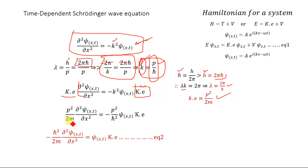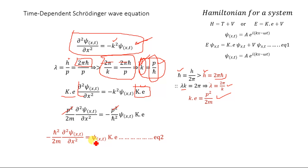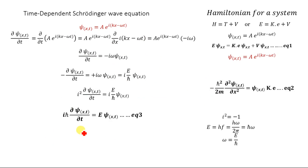The p² cancels from both sides. Shifting the minus sign and multiplying by ℏ², we obtain: −ℏ²/2m · ∂²ψ(x,t)/∂x² = KE · ψ(x,t). We name this Equation 2.